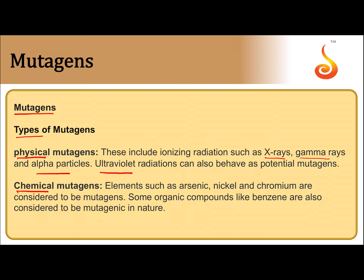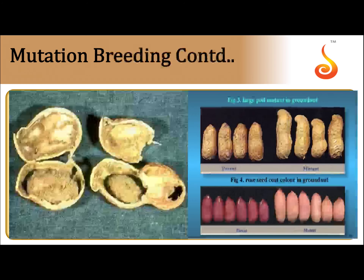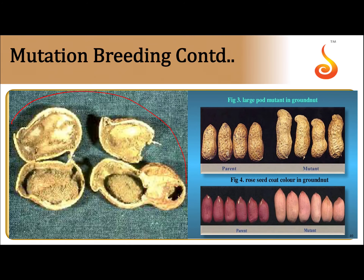Examples of chemical mutagenic agents include arsenic acid, nickel, chromium, mustard gas, ethyl methane sulfonate, methyl methane sulfonate, and others.